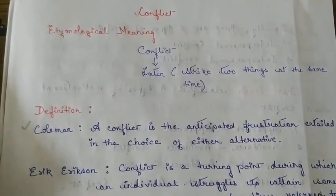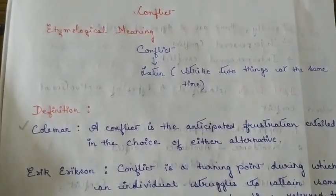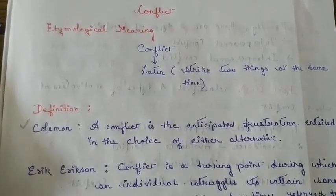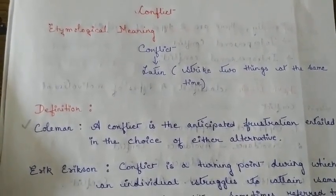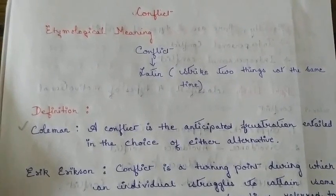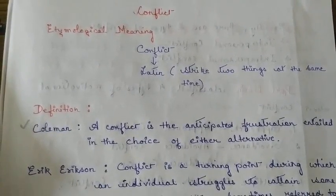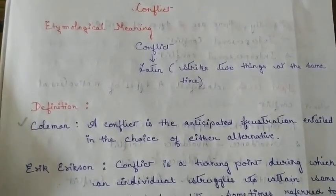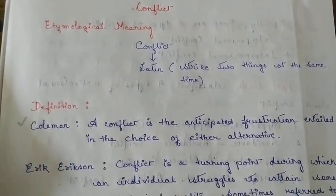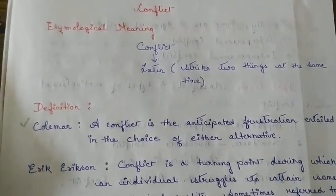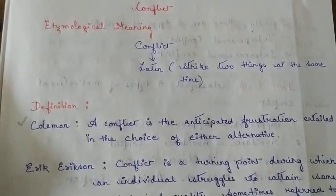Now we will discuss the etymological meaning of conflict. The word conflict is derived from the Latin word which means to strike two things at the same time.